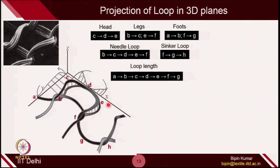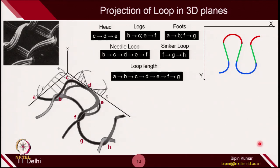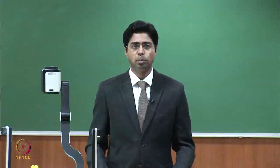Starting with the X-Y plane, on which the fabric is placed: if you see from the top, the projection of each yarn will look like a perfect loop, which is the diagram we see everywhere in research papers and books. From A, B, C, D, E, F, G, H — each segment can be identified. C to D to E is the head part, and F, G, H is the sinker part. This is the most simple projection.